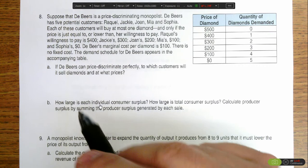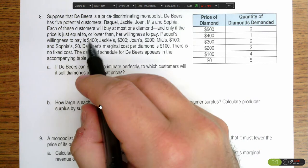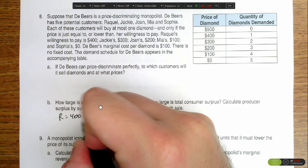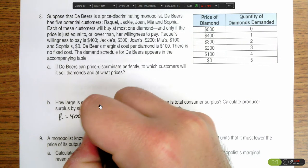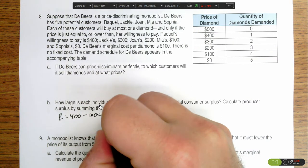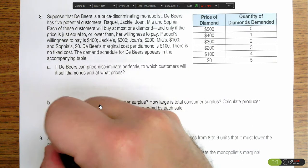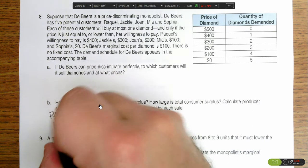Producer surplus, we can calculate it. For the first one, Raquel is willing to pay $400. It costs $100 to produce, so there's $300 in producer surplus when it comes to Raquel.